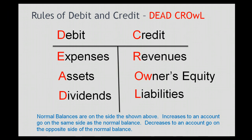If an account increases, it goes on the same side as your normal balance. For example, if an asset increases, it will go on the same side as the normal balance, so you will debit that amount to your T-account. Decreases go on the opposite side, so if an asset decreases, you would put it on the credit side of that asset account.